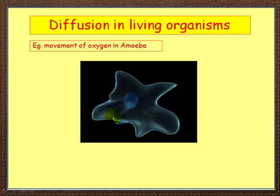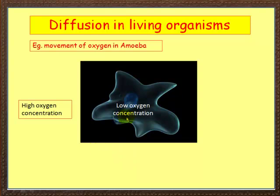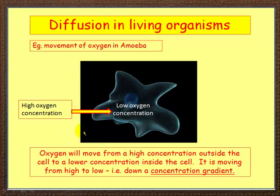Let's look at a natural cell. Here's a single-celled organism living in fresh water called amoeba. As the amoeba uses up oxygen by respiration, a low oxygen concentration develops inside it. In the surrounding water there is a higher oxygen concentration. So oxygen moves from the high concentration outside the cell to the lower concentration inside the cell — from high to low.